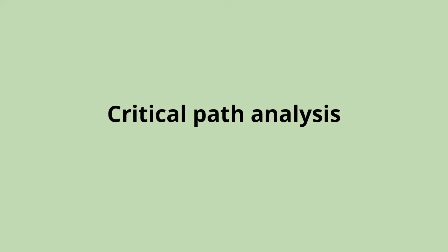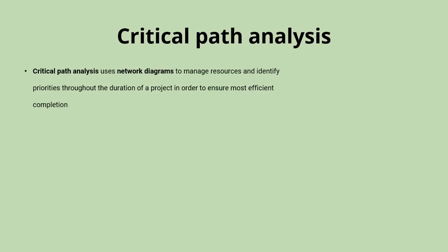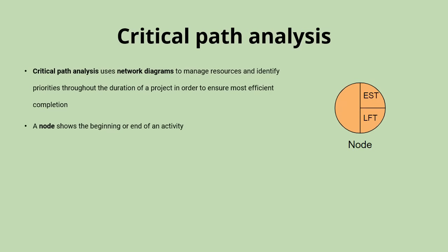This video explains how to use critical path analysis. Critical path analysis is a way of planning projects using network diagrams to map out the tasks that need to be done and in what order. In these network diagrams we use certain symbols — this circle is a node, and that shows the beginning or end point of an activity.